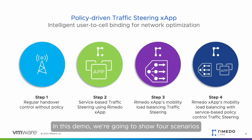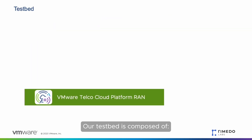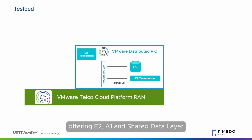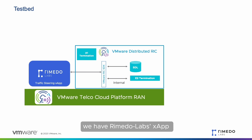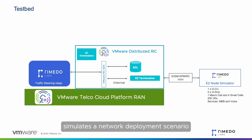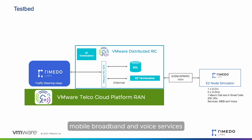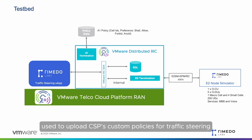In this demo, we are going to show four scenarios based on the different traffic steering features of the X-App. Our testbed is composed of the VMware Distributed RIC, offering E2, A1, and shared data layer database services to the application. Integrated through the VMware SDK, we have Remedo Labs X-App. Remedo Labs' E2 node simulator simulates a network deployment scenario with one CU, five DUs, five cells — one macro and four small cells — and 250 mobile devices accessing mobile broadband and voice services. The testbed is completed with an A1 policy data file used to upload CSP's custom policies for traffic steering.